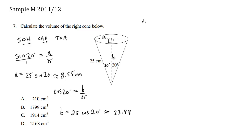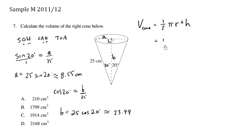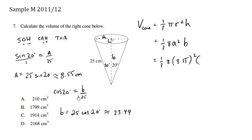Now that we have the information we need, we finish with the volume formula. Volume of a cone equals one third times pi r squared times the height. Our R value is A and our H value is B, so this equals one third times pi times 8.55 squared times 23.49.